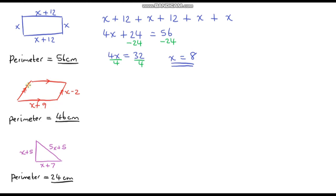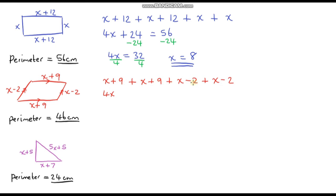For the next one — a parallelogram — we're not given all values, but opposite sides are equal. So the expression for the perimeter is x plus 9 plus x plus 9 plus x minus 2 plus x minus 2. Simplifying: x plus x plus x plus x is 4x. For the numbers: 9 plus 9 is 18, minus 2 is 16, minus another 2 is 14 — so plus 14. We set that equal to 46. Taking away 14 from both sides gives 4x equals 32. So x equals 8 again.